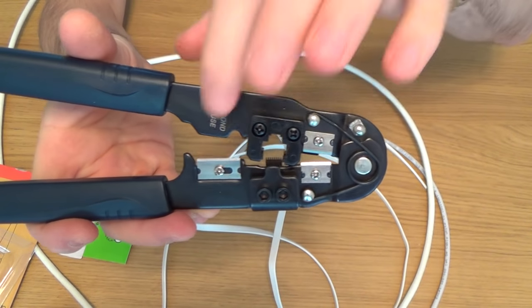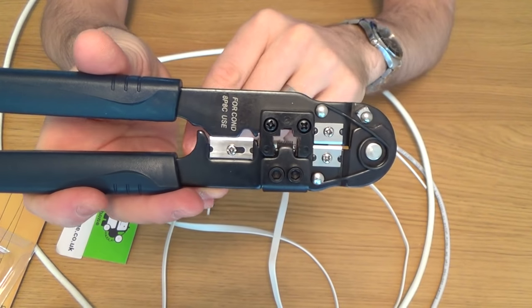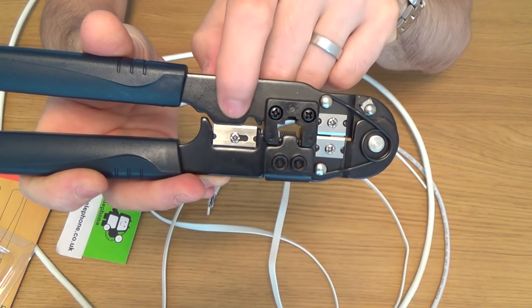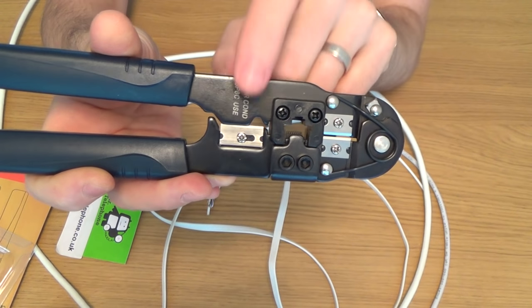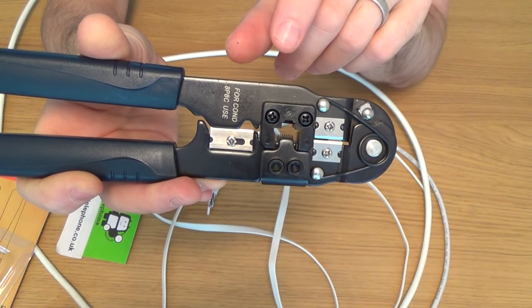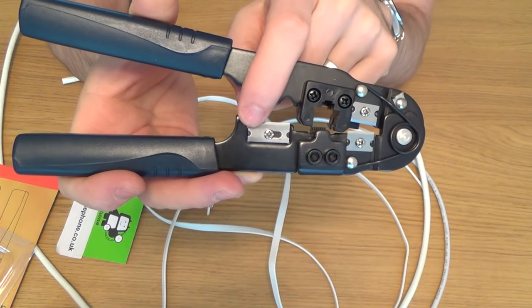This blade here, this one here, is for basically getting a nice straight line on the wires or the end of the cable, if you're cutting cable, just before you insert it into the plug. You want the wires to be nice and straight, so that's the bit you use for that.